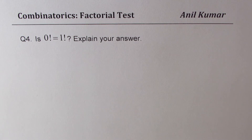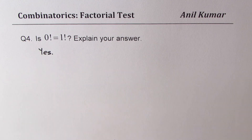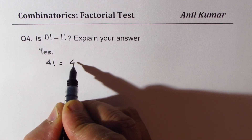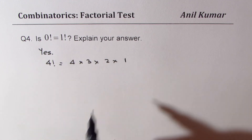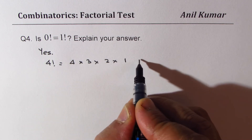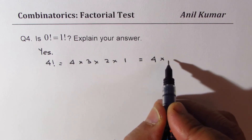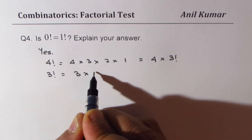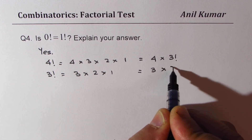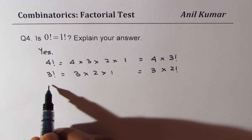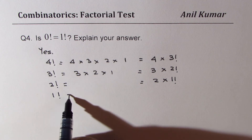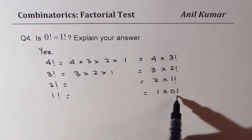Here is the last question, question number four: is 0 factorial equal to 1 factorial? Explain your answer. The answer is yes. Let's take a few examples. 4 factorial is 4 times 3 times 2 times 1, which can be written as 4 times 3 factorial. Similarly, 3 factorial is 3 times 2 factorial. Following the same trend, 2 factorial is 2 times 1 factorial, and 1 factorial can be written as 1 times 0 factorial.